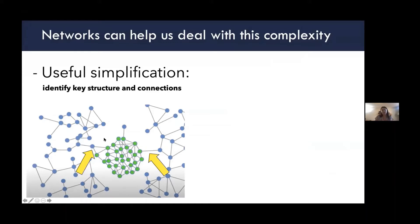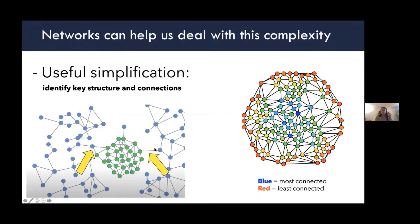Species moving, or interactions between species within systems — this simplification can help us identify key structures and connections within networks. For example, if we care about diffusion or spread processes, we might use networks to identify clusters and key bottlenecks in the system for spread, or we can use networks to identify key nodes, whether they're keystone species or patches that are really important for spread of invasive species. Here the blue nodes are most connected and the red are least connected.